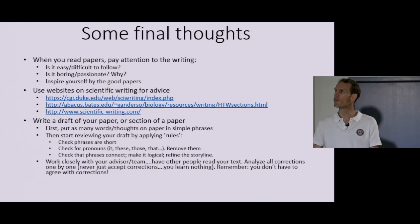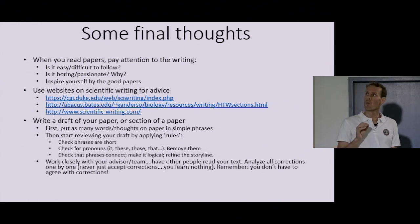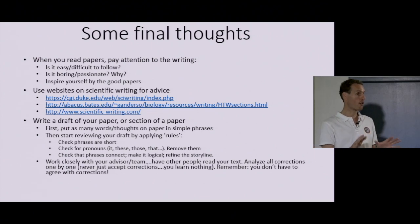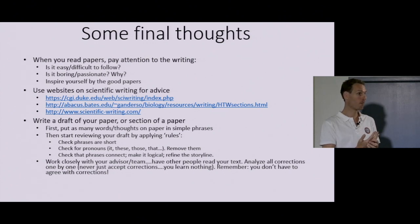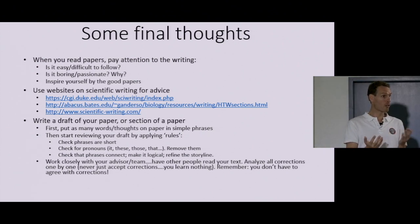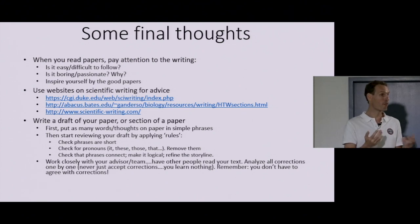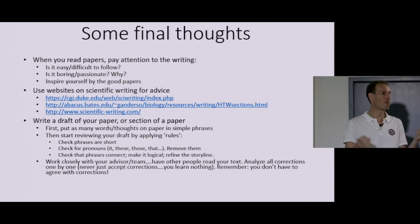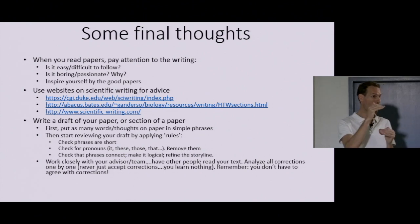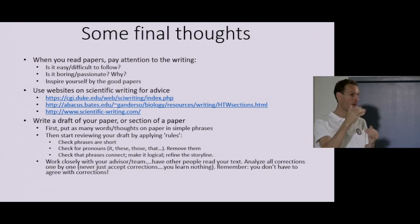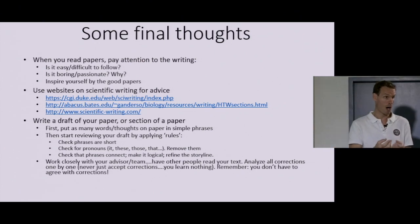Last slide with some final thoughts. When you read papers, pay attention to how other people write. You can run into badly written papers you don't understand, but also pay attention to papers you really like that are easy to follow. Ask yourself why they are so easy to follow — what is it the authors do that makes the science so accessible? We all have PDF libraries ordered by different fields: climate change, contaminants, microplastics. Make sections for good papers and bad papers, and especially come back to the good papers to remind yourself why they were so well written.